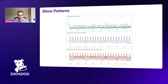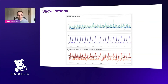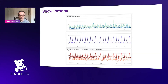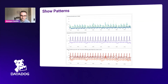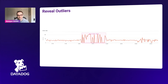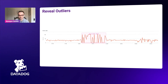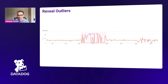Another reason visualization is critical is it's really good at showing patterns. Humans are really good at identifying patterns when they can see a lot of information at once. This example shows time series graphs with periodic data — you can make out that the data is fairly periodic even on a dense graph. And once patterns are established, visualization is great at revealing outliers, showing something unexpected very efficiently.